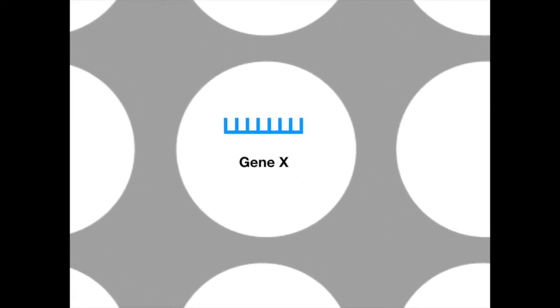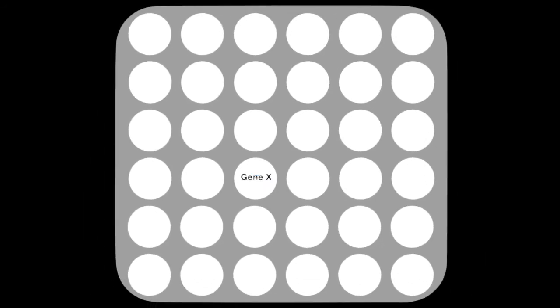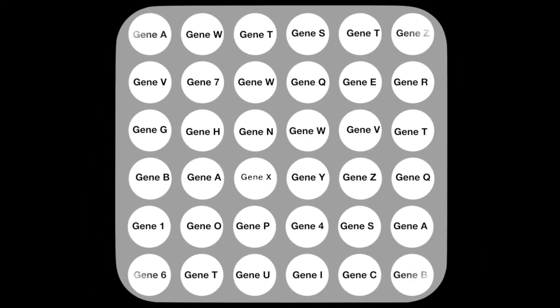The way a microarray works is by inserting a gene sequence of a known gene in a well on a plate, and binding the DNA to the plate so it can't move. This is done to thousands of genes in thousands of wells on the same plate.